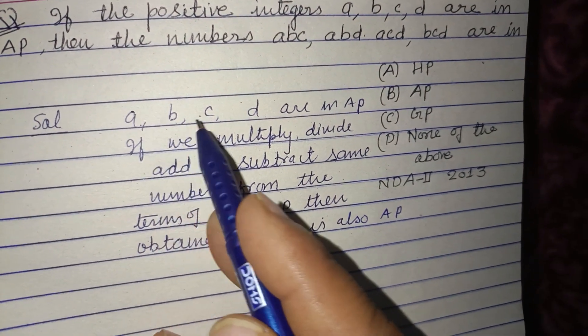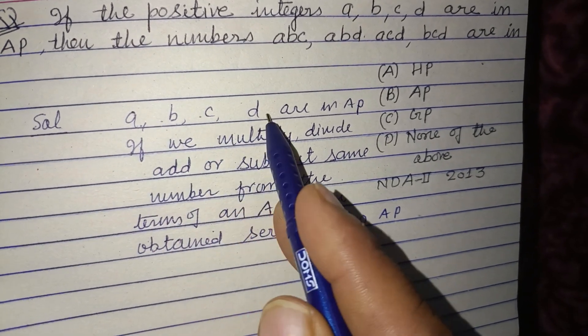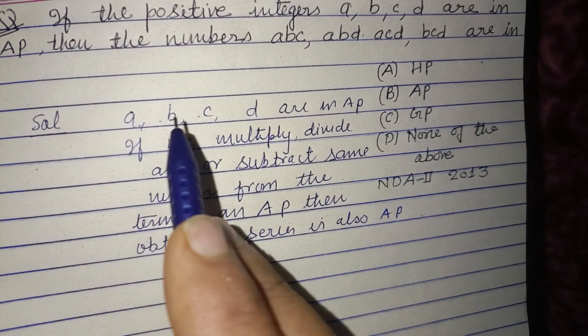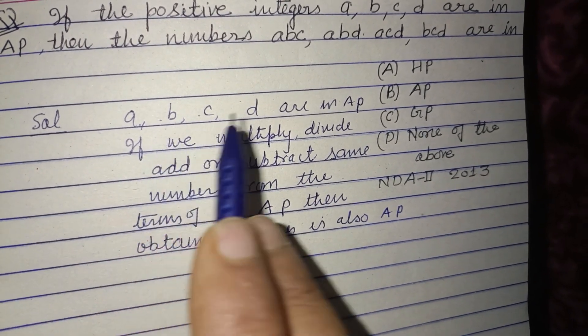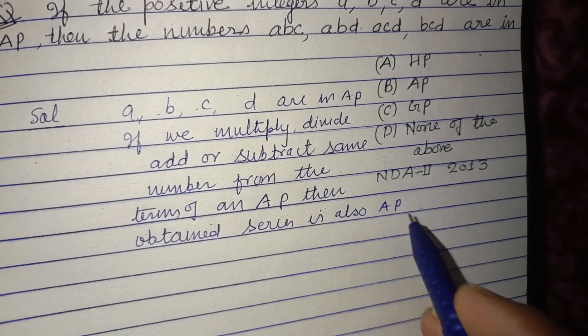If we multiply these terms by the same number, if we add the same number to these terms, if we divide these terms by the same number, or if we subtract the same number from these terms, the obtained series is also AP.